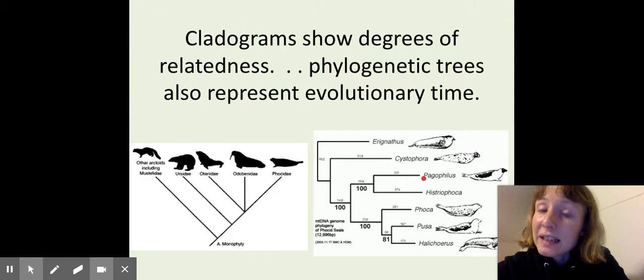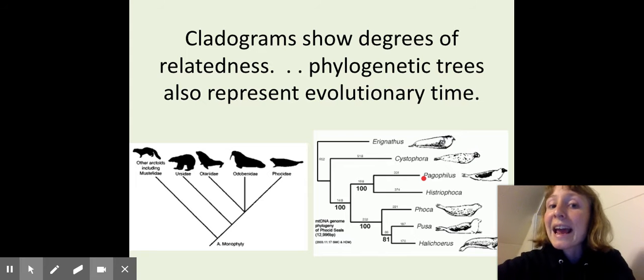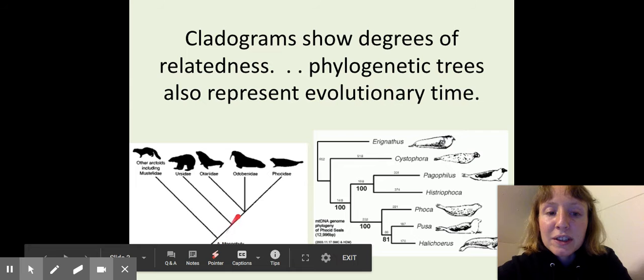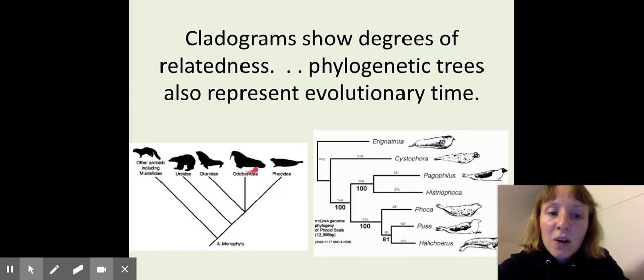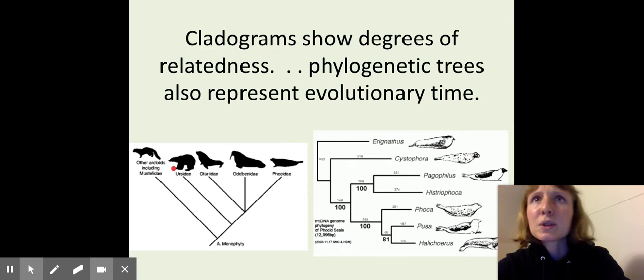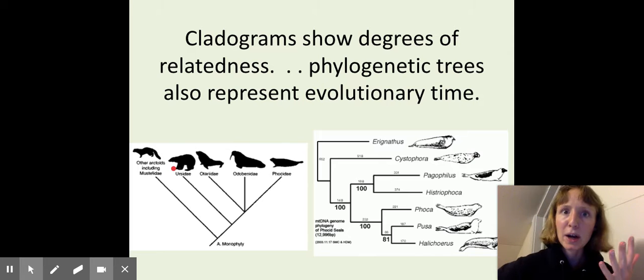Cladograms show degrees of relatedness, whereas phylogenetic trees show degrees of relatedness and evolutionary time. If you look at a cladogram, it usually looks like this, kind of like a V. And it might show us that the walrus here is more closely related to a seal than a bear, but it doesn't tell us when those species might have split off or how much more like a seal is it than a bear.